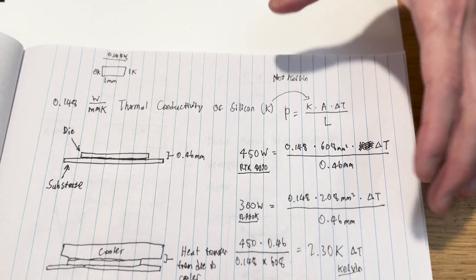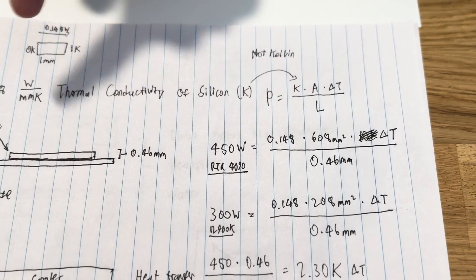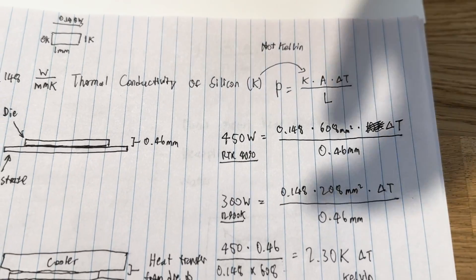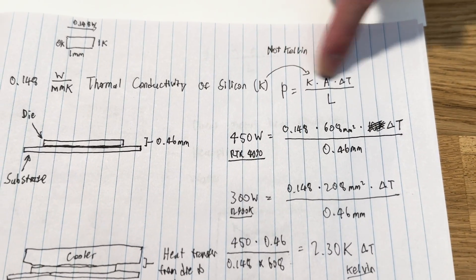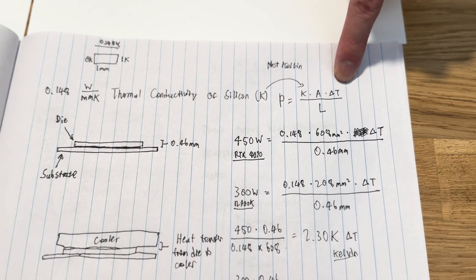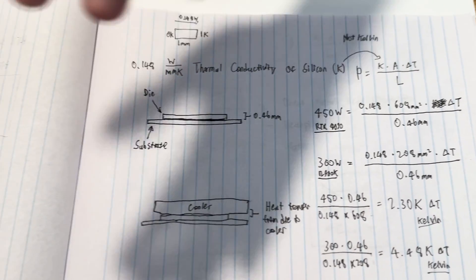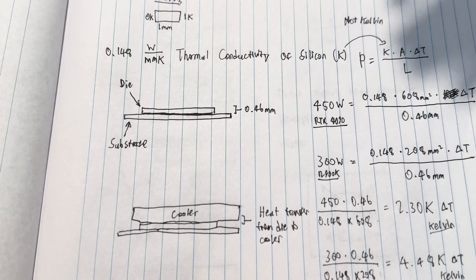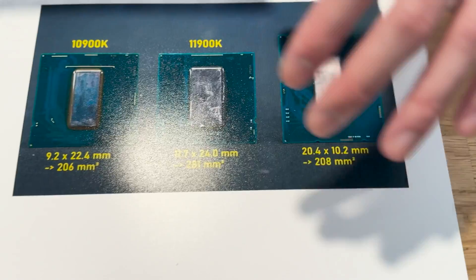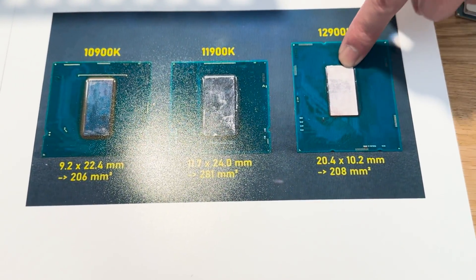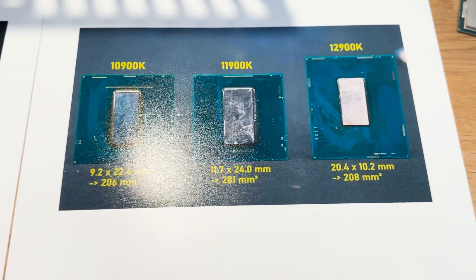We can use thermal conductivity in the equation for heat transfer. K is thermal conductivity — not Kelvin — and heat transfer tells you how many watts you can transfer given a certain thermal conductivity, area, delta temperature, and thickness or length the heat has to travel through. For this explanation, I'll use 0.46 mm for the CPU and GPU die thickness, based on Balor's video where he delided CPUs and showed the 12900K has a die thickness of 0.46 mm. We'll assume the 4090 also has a die thickness of 0.46 mm.